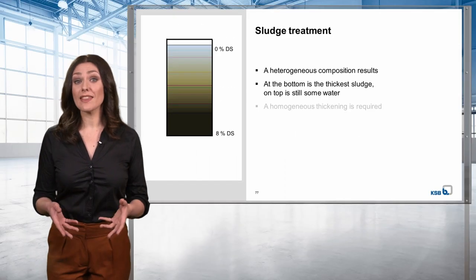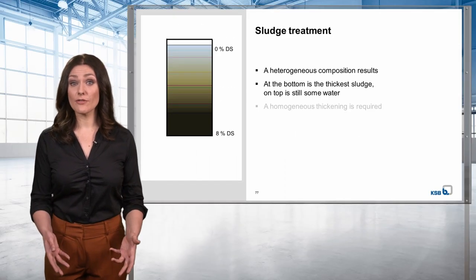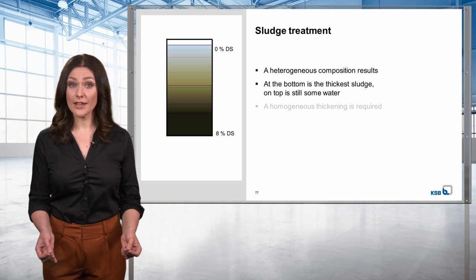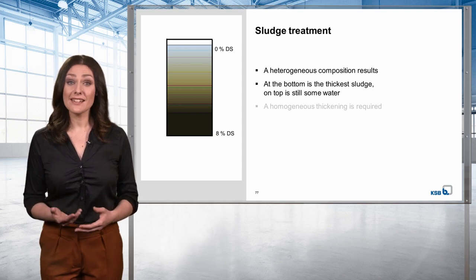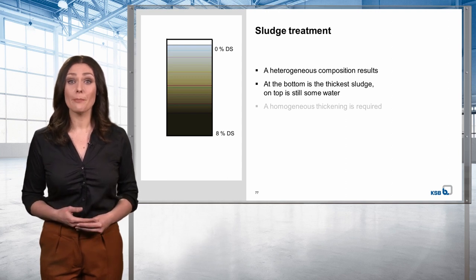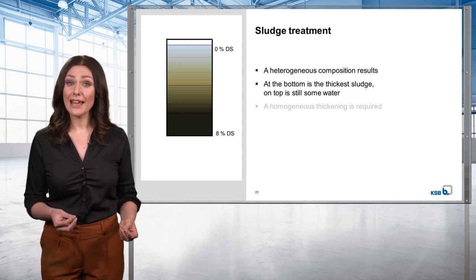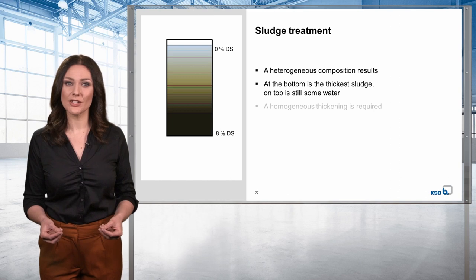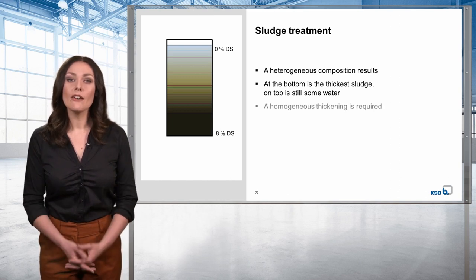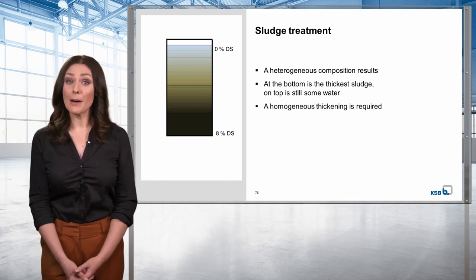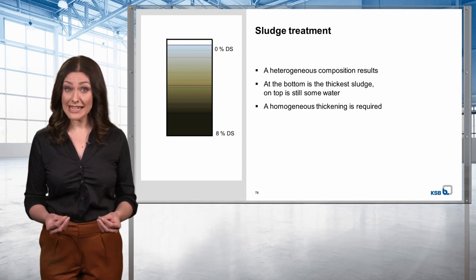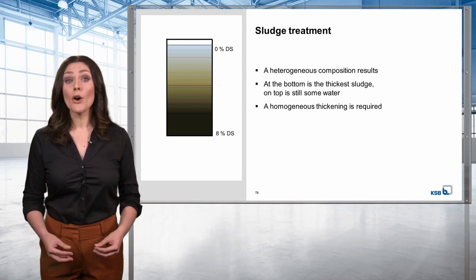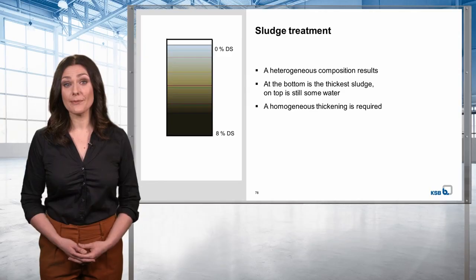The resulting thickened sludge is of a heterogeneous composition, as shown here. At the bottom is the thickest sludge from the first thickening phase; right on top, you can still see some of the water in the tank. The DS content might be 8% at the bottom and 0% at the top, for example. For the mass to be pumped off and for a uniform quality to be guaranteed for the following processes, homogeneous thickening is required.